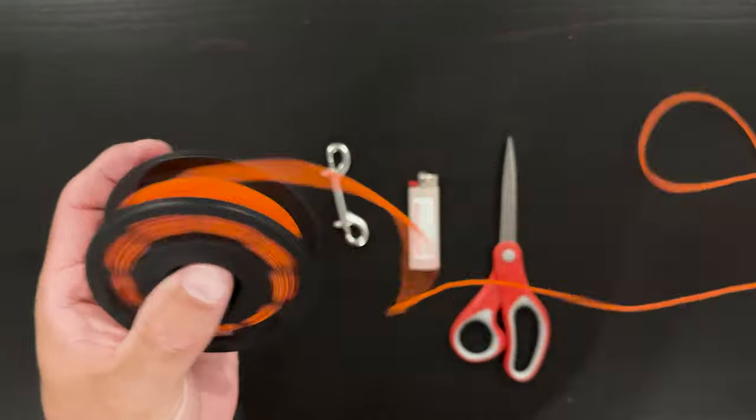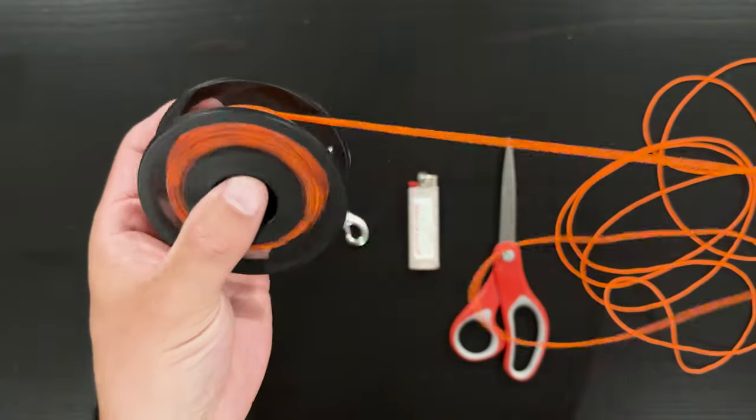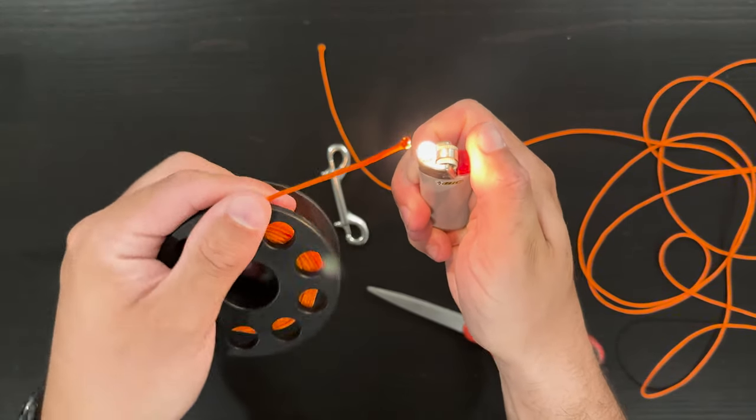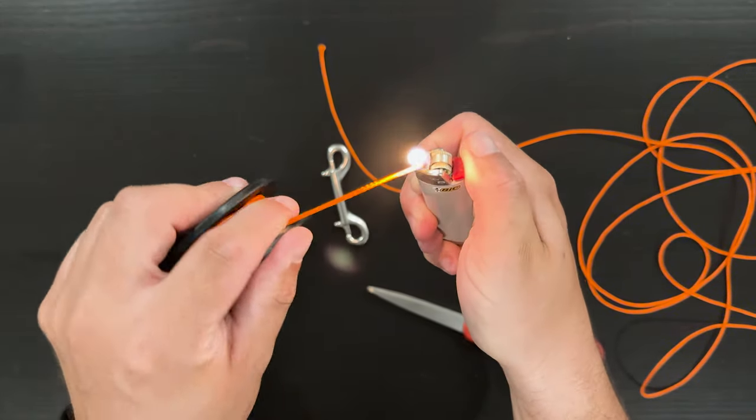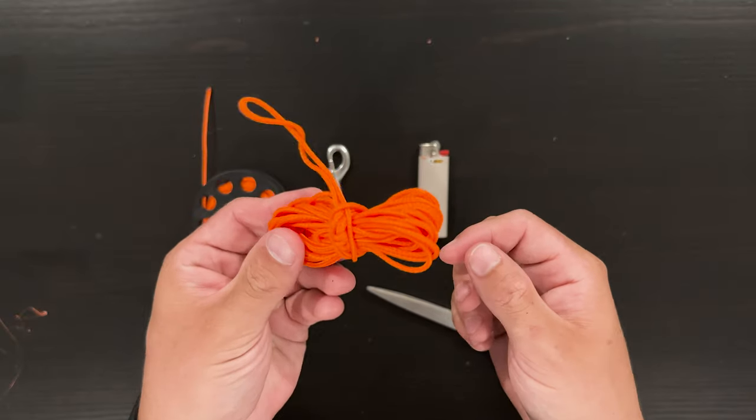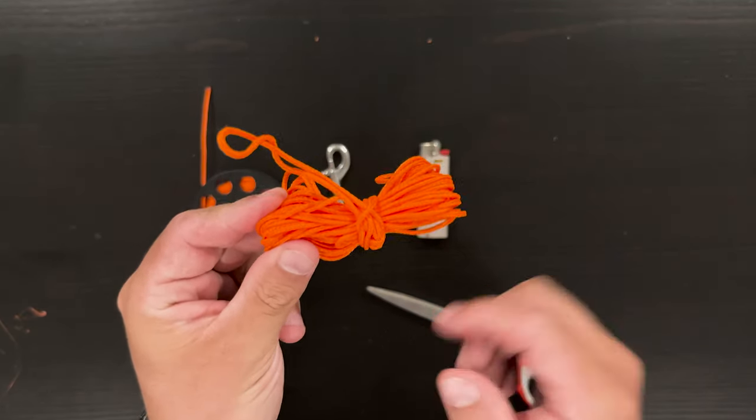Again, once you've pulled off that 20-25% of the line so you have plenty of space in the eyelets around the spool itself, go ahead and cut that, burn the edges so you don't have any fraying both on the line on the reel as well as the line you removed, then store that excess line away. Now that we've cut off that excess line, we're going to tie a couple loops in our line so we can make it easier to use underwater even if we're wearing gloves.